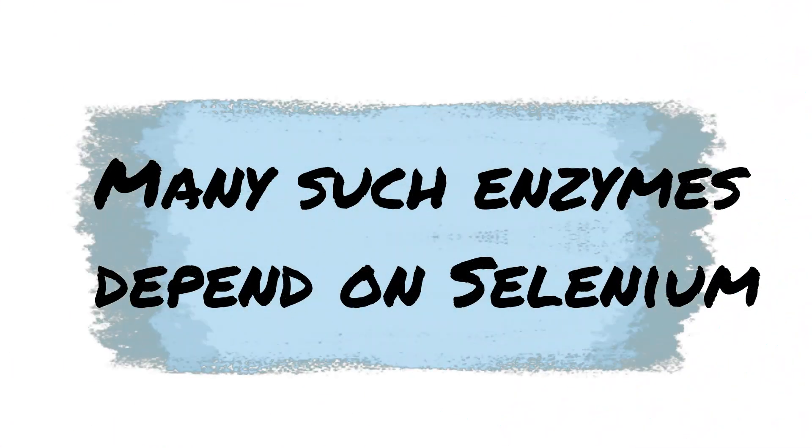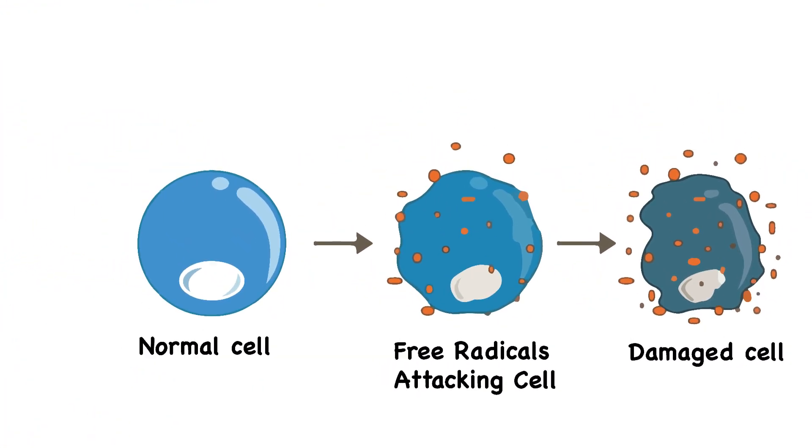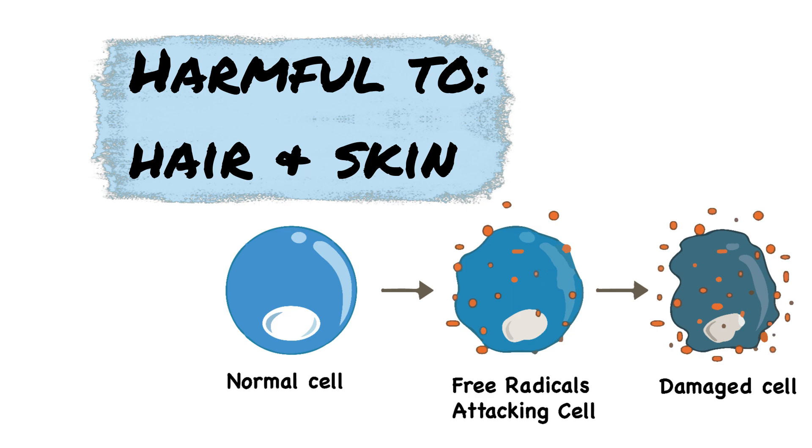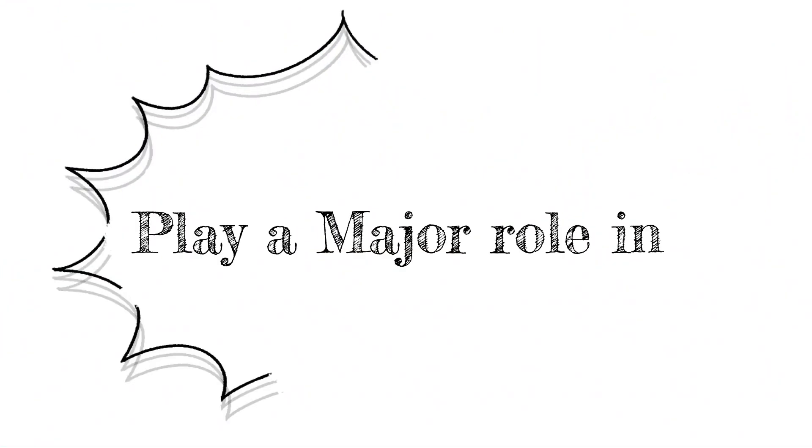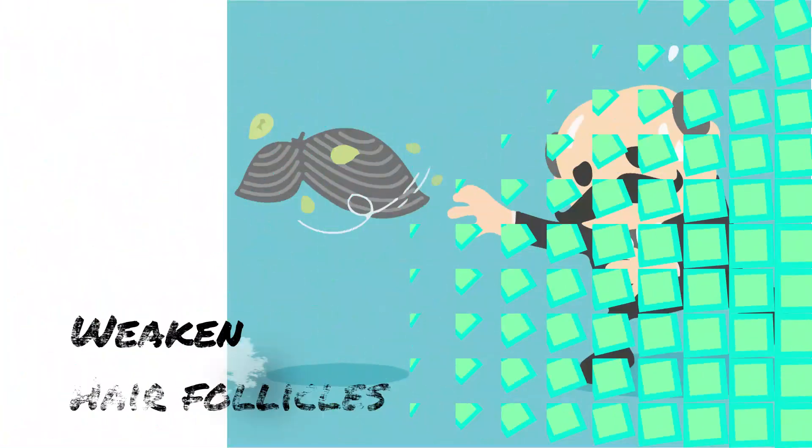Some enzymes in the body help remove free radicals, and for this role many such enzymes depend on selenium. The free radicals are very harmful to the healthy growth of hair and skin cells of the body, since they play a major factor in premature aging and they also weaken hair follicles.